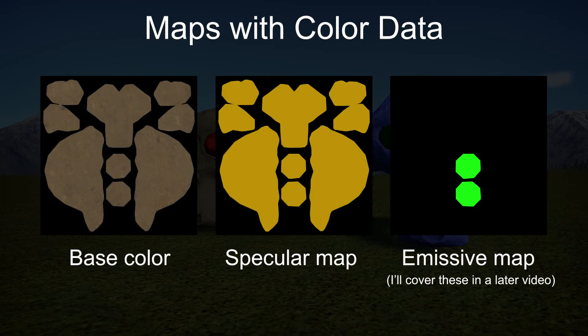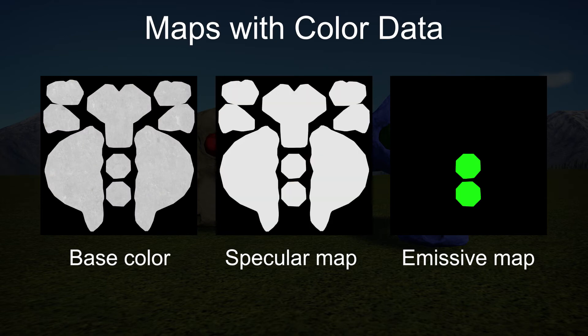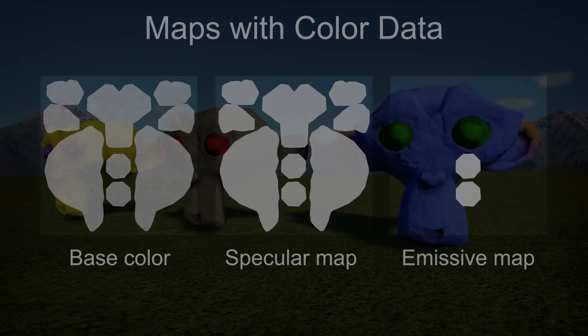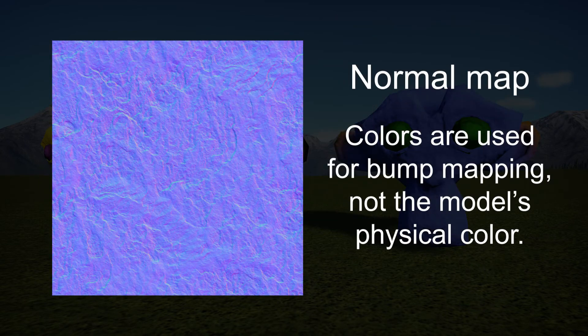Flexicolors are applied over the top of all other maps, so the flexicolor part of any map that would normally be in color — such as base color, specular maps, or emissive maps — would be gray instead. Note that this does not apply to normal maps, since their colors have a special purpose that has nothing to do with the final color of your model.